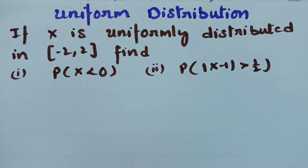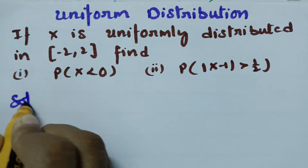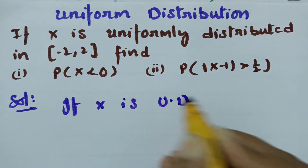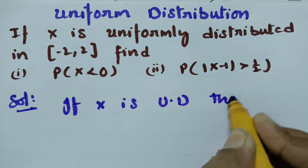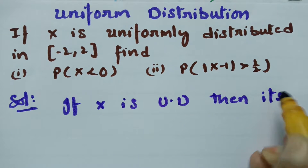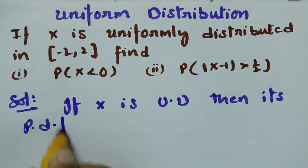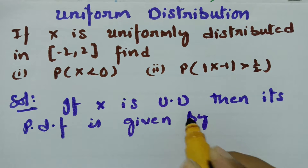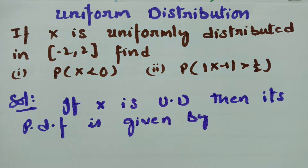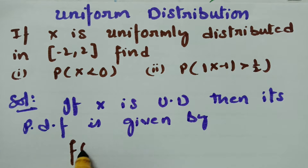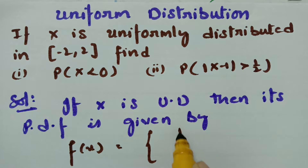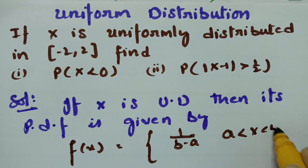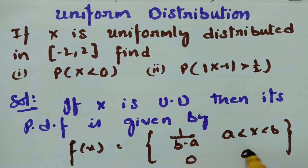x is uniformly distributed. In the solution, if x is uniformly distributed, then its probability density function is given by f of x is equal to 1 by b minus a, where x lies between a and b, and 0 otherwise.